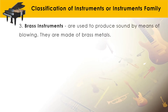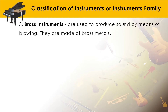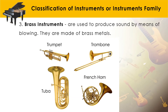The third family is brass instruments. They produce sound by means of blowing, and they are made of brass metals. Examples of brass instruments include the trumpet, trombone, tuba, and the French horn.